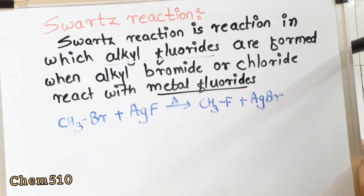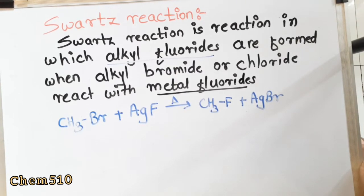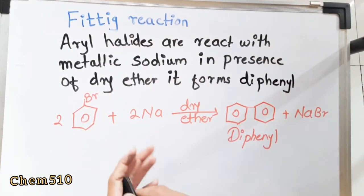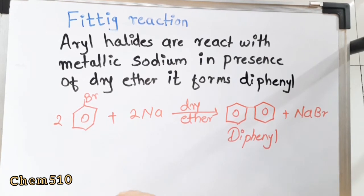In the Swarts reaction, an alkyl bromide is converted to an alkyl fluoride — here, methyl bromide is converted into methyl fluoride. The third reaction is the Fittig reaction, which is similar to the Wurtz reaction.